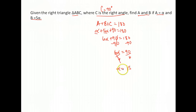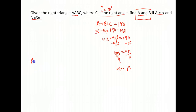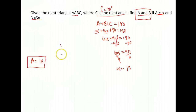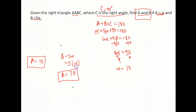Double-check what you were asked to find — both A and B. A was alpha, so A is just 15. B is 5 times alpha, so B is 5 times 15, which gives us 75. So we did what we were supposed to: we found both A and B.